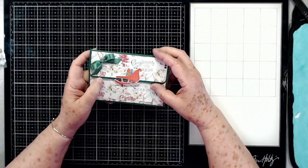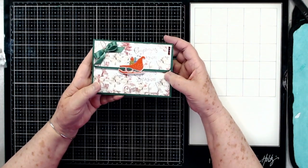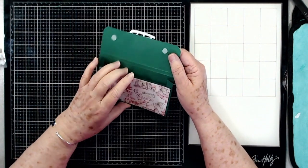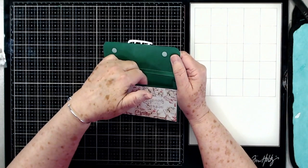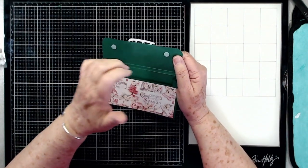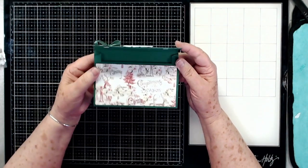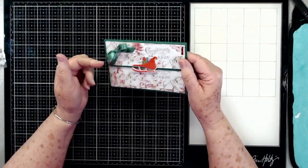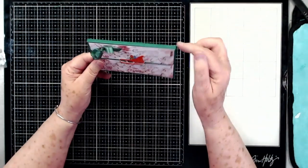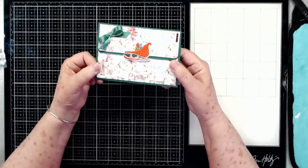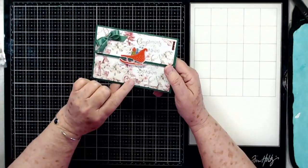Hey guys, this is E with Scrapbooking with Me, and this is what we're going to be making today. It is a little wallet for money, credit cards, or gift cards, whatever you want to put in there and give to someone for Christmas. These slide right down in their stocking or you can put a string through them and hang them from your tree. They're quick, easy, and very cute.